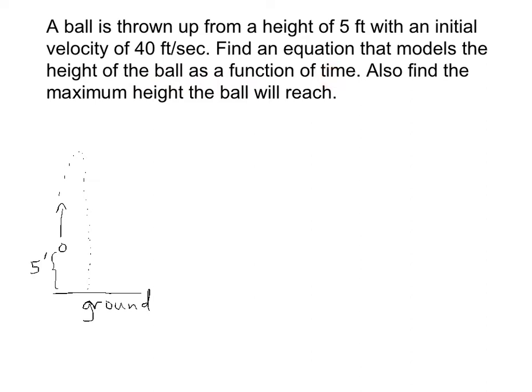So let me give that to you. The formula is s of t is equal to negative one-half times g times t squared. This g here, that's the acceleration due to gravity. Plus v naught times t. V naught is the initial velocity. Plus s naught, and that's the initial height.